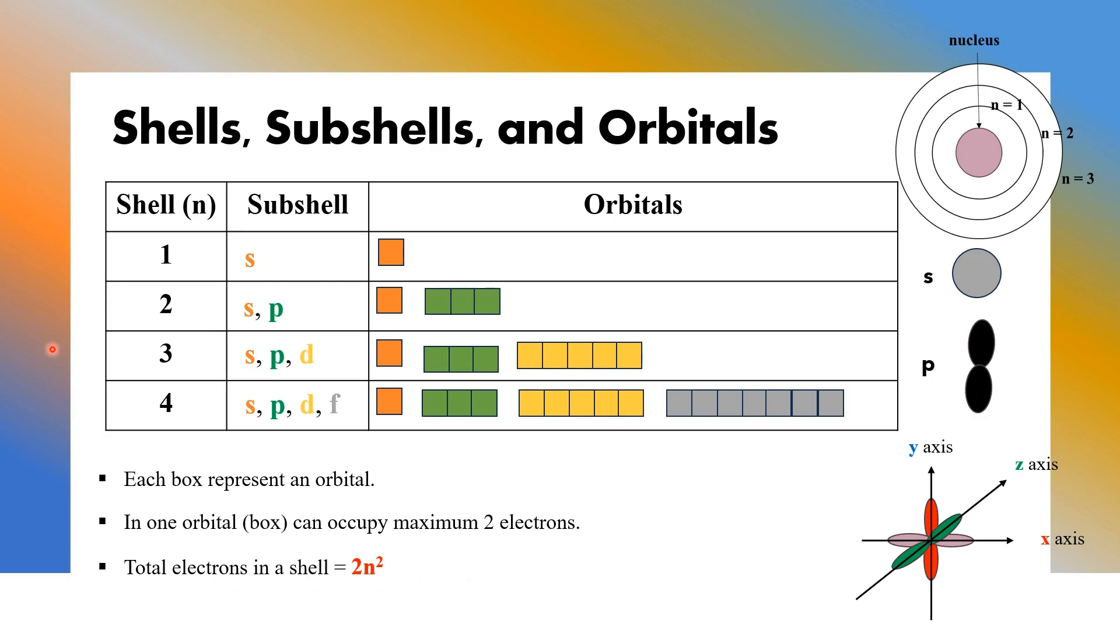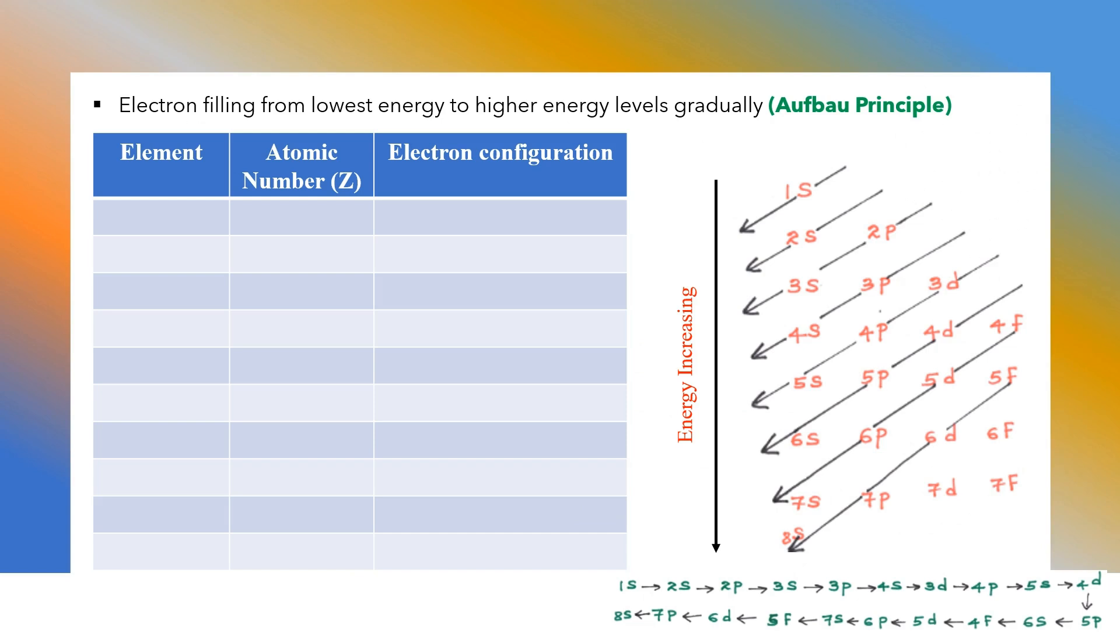Let's go and practice electron configuration writing for first 30 elements. Electron configuration writing: electron filling from lowest energy level to the highest energy level, lower level to the high level gradually. This is to be called Aufbau principle. You can see a diagram given in the right hand side, Aufbau diagram. Increasing order from 1s to 8s, energy is increasing. So electron filled from 1s to gradually next highest energy level 2s and then 2p, 3s, 3p, 4s and so on. So you need to follow a zigzag pattern here.